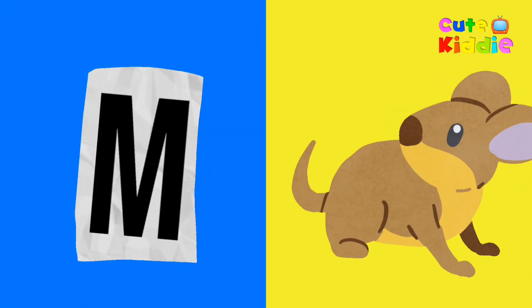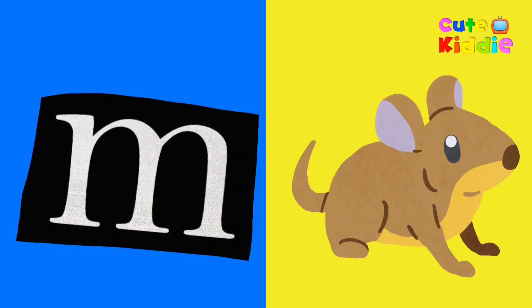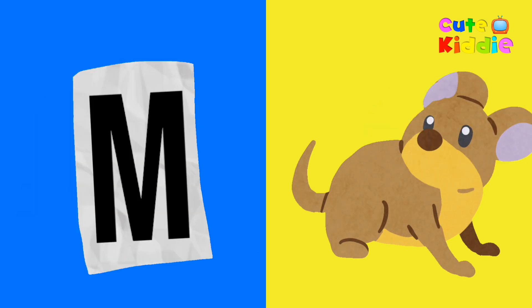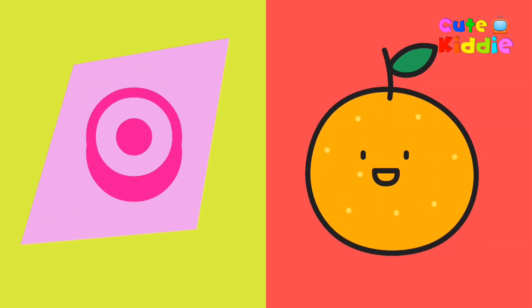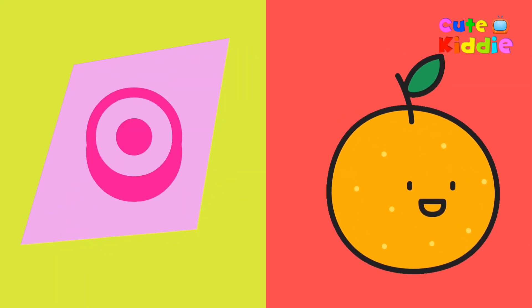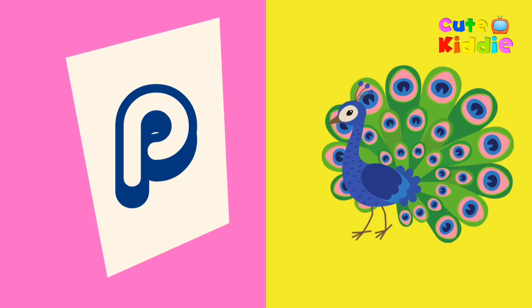M for mouse, N for newspaper, O for orange, E for peacock.